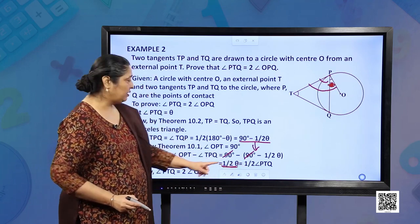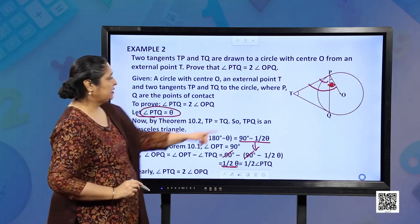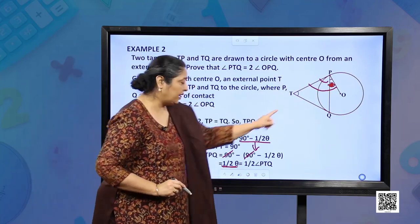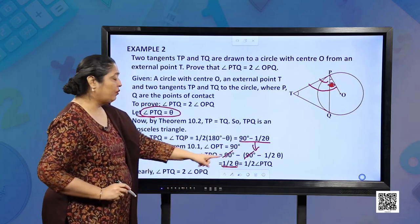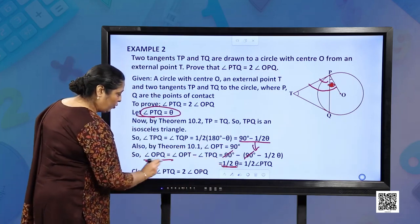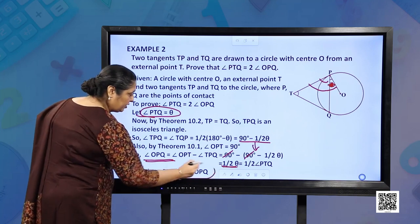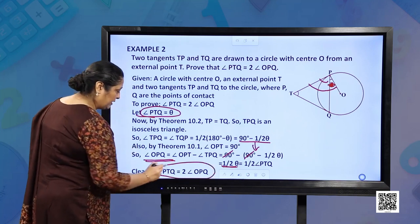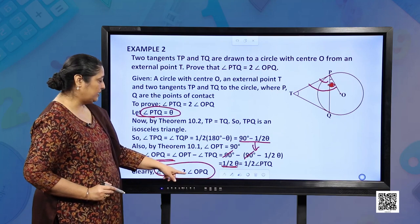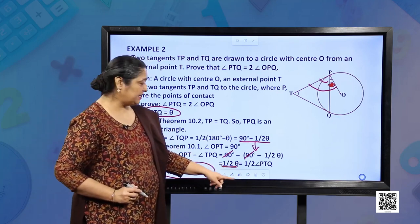What is half of theta? Theta is this angle PTQ. So half of theta is angle OPQ, and we have proved the question. Angle PTQ is equal to twice of angle OPQ. I hope you have understood this.